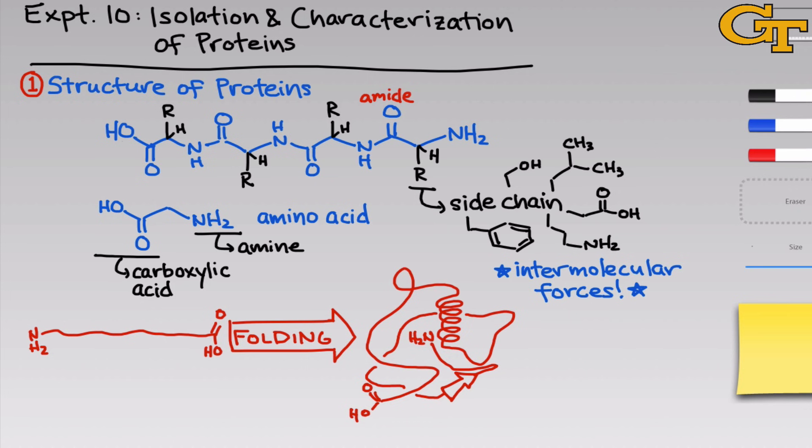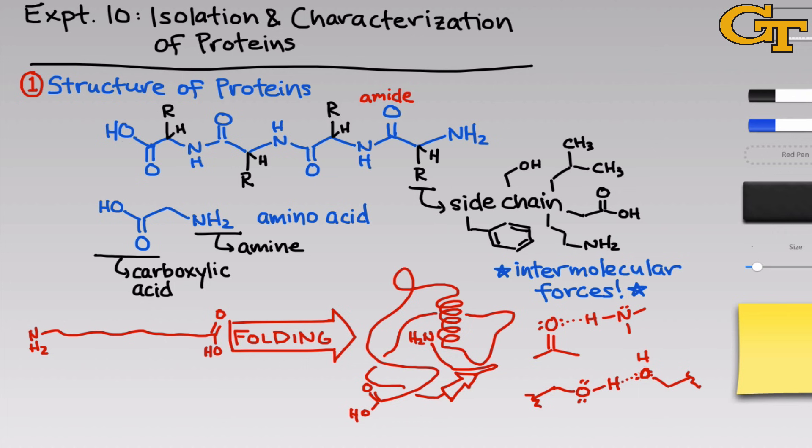Hydrogen bonds are a very common and critical example of the intermolecular forces that hold proteins in a folded state. For example, the carbonyl oxygen within the backbone can hydrogen bond with an NH group also within the backbone, and this is responsible for holding helices in place. We also find hydrogen bonds between side chains — for example, a hydroxyl group in serine can hydrogen bond with another serine hydroxyl group, creating a link between two side chains. Understanding these forces is critical because disrupting them is the basis for denaturing or unfolding proteins.